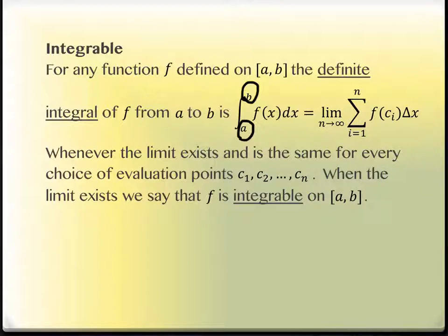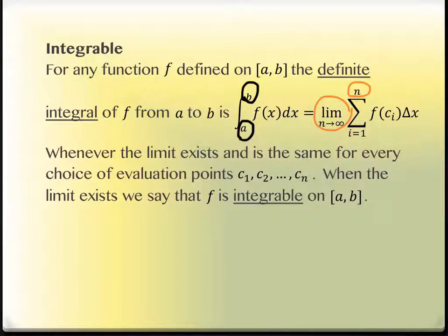So what you're seeing in this description is that n approaching infinity tells you what's happening to the rectangles — you get more of them. Visually, you want to picture these rectangles becoming really, really skinny and there being infinitely many of them. If you let the number of rectangles get infinitely large, then the approximation gets infinitely better. So this integral notation from a to b is that process of letting those rectangles get infinitely many between our endpoints.